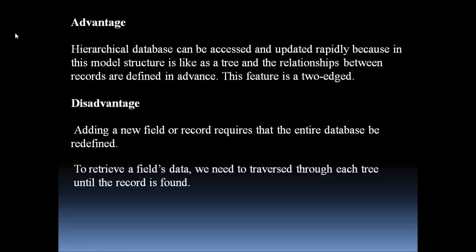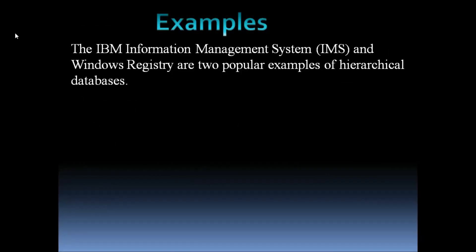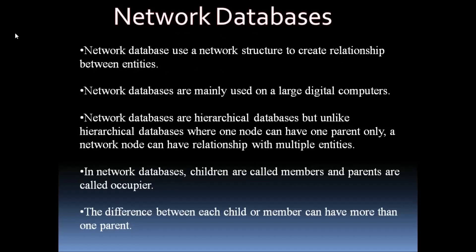This traversal definitely takes more processing time. The real-world examples of hierarchical databases are IBM's Information Management System (IMS) and the Windows Registry — two popular examples. In Linux also, the Linux file system is hierarchical: files are stored in a tree structure. Next is the network database.